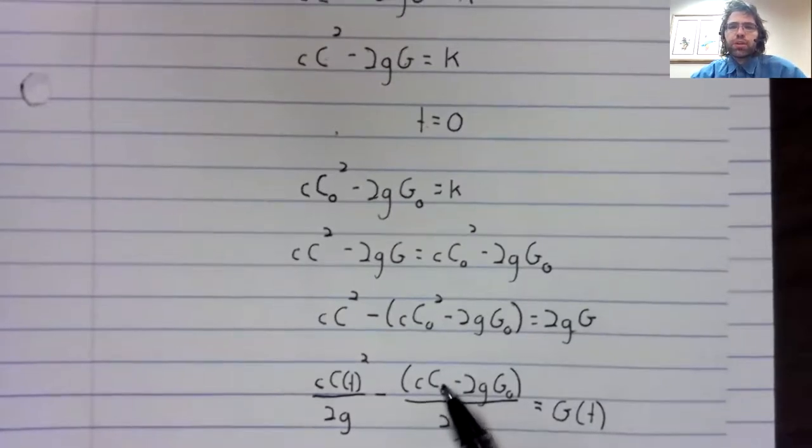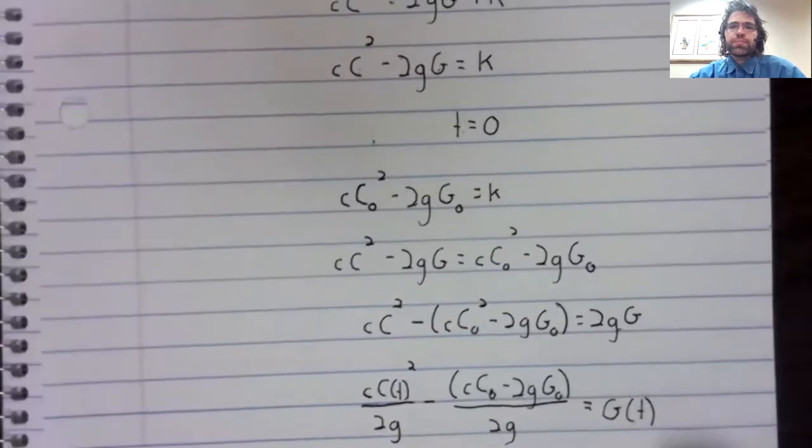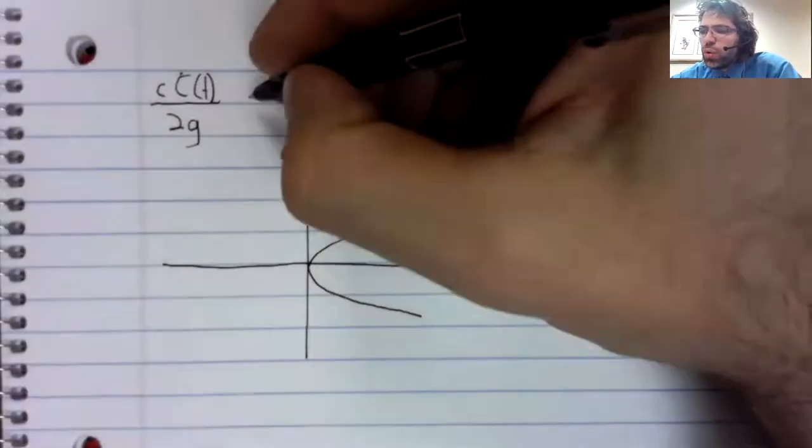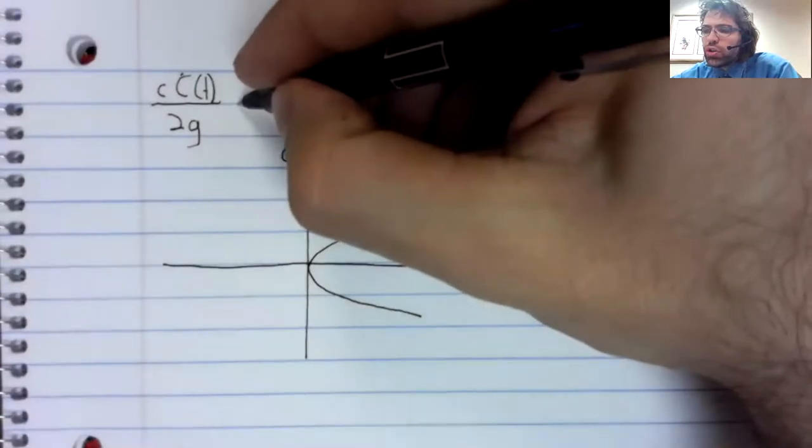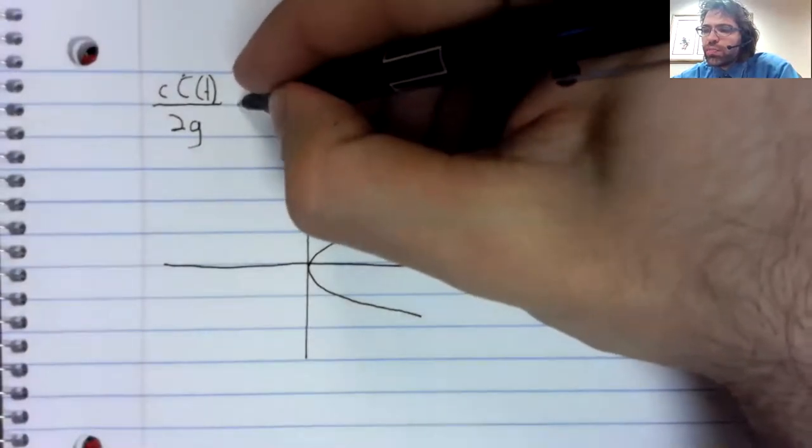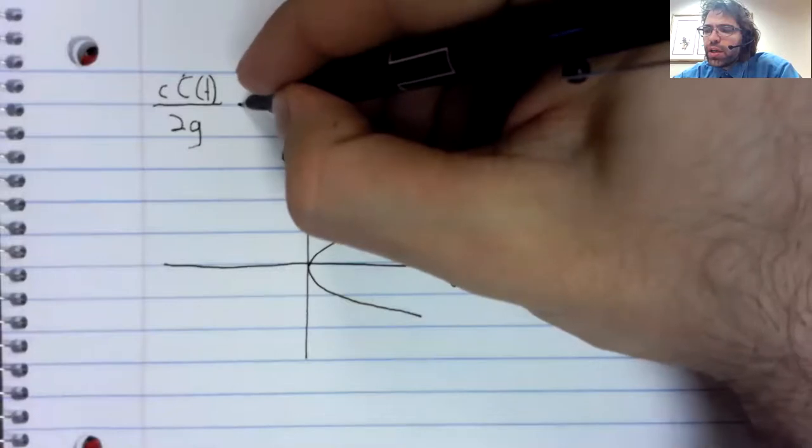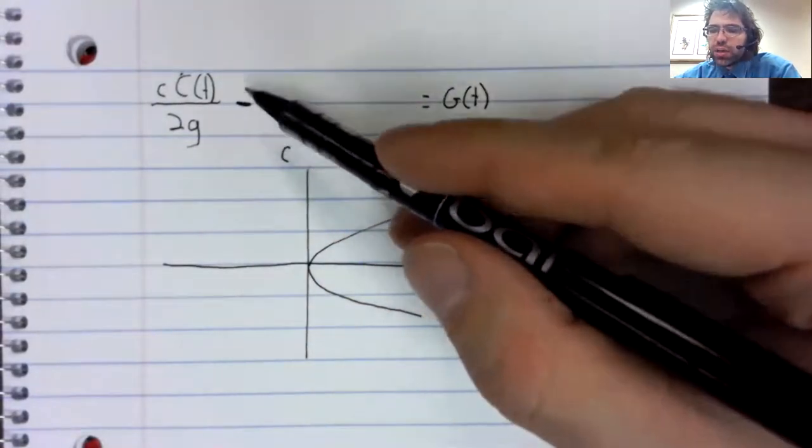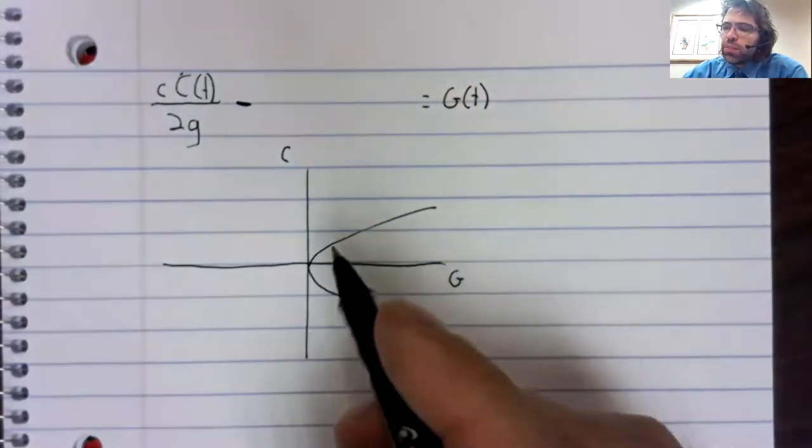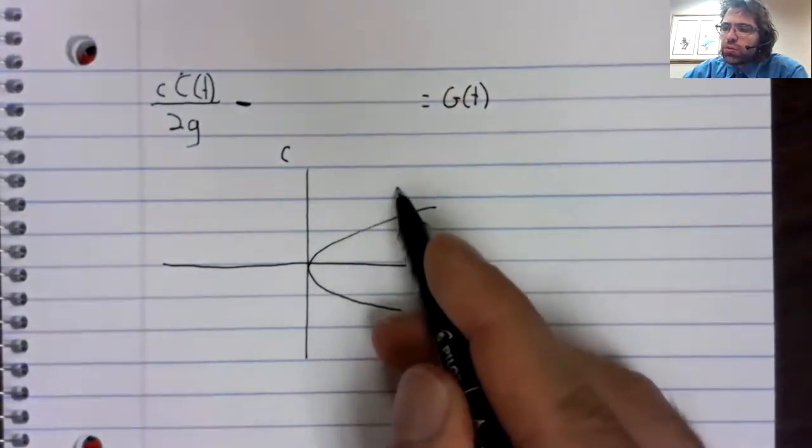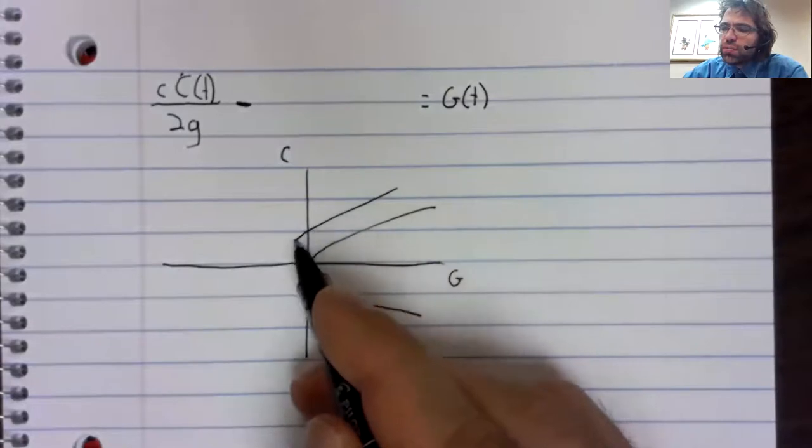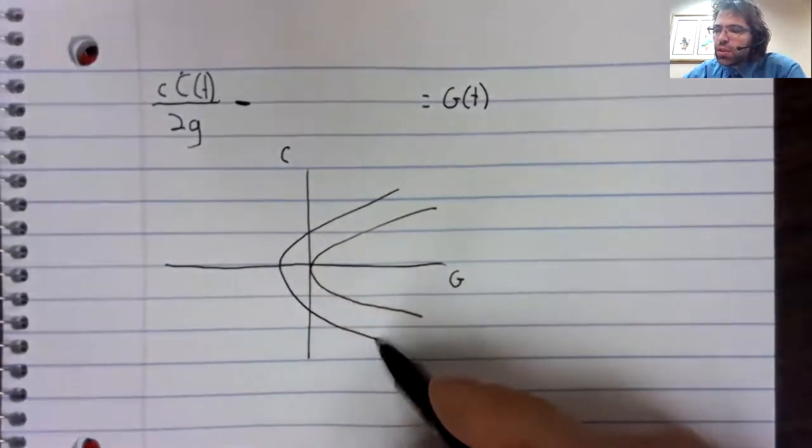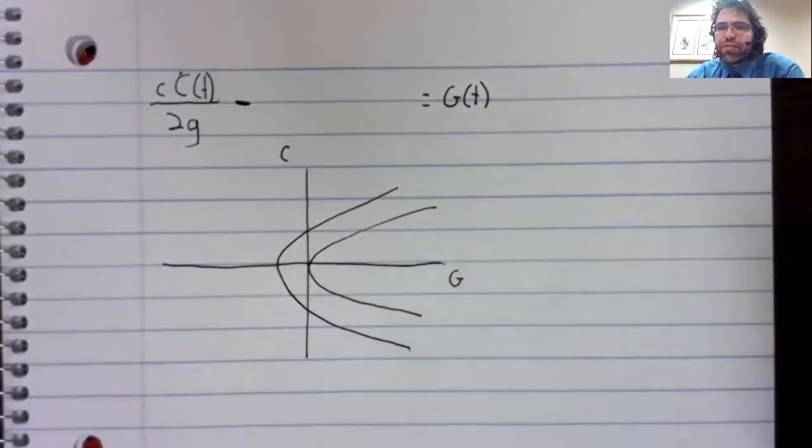It's a horizontal shift. And if we subtract a positive number, it's going to be a horizontal shift to the left.